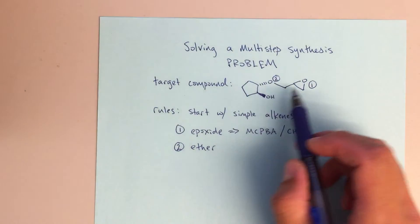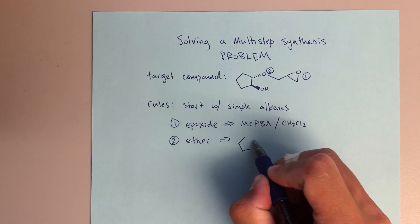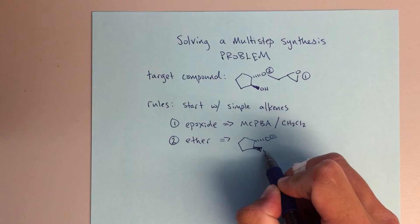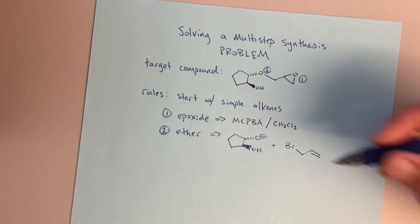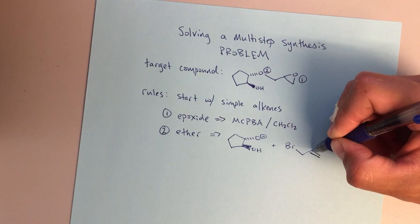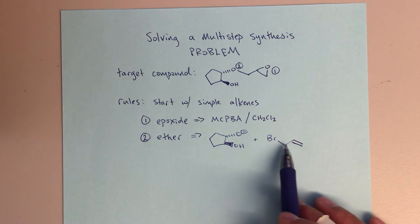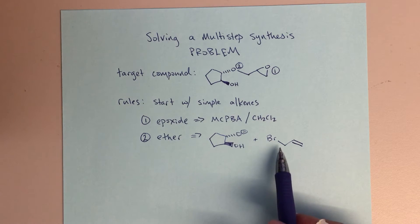So here we're forming that ether, and this is the strategy that I would employ to form this ether. If we imagine putting these two pieces together where I've got this alkoxide coming together with this alkyl halide.